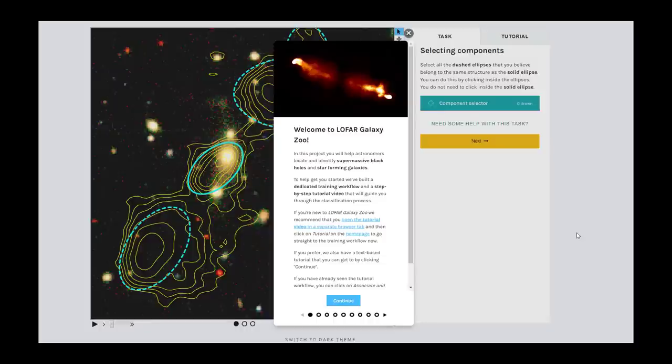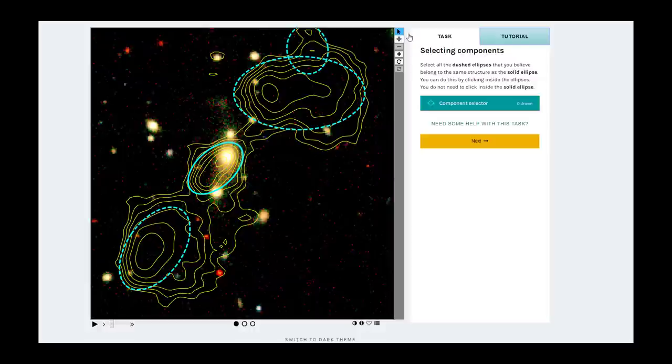The first thing that will pop up is the tutorial. Be sure to follow along with this video using the special tutorial workflow by clicking on the link in the tutorial. Since you are watching the tutorial video right now, you can go ahead and close the text tutorial by clicking on the top right. Then you should see the same image as shown here. You can always open it again later by clicking on Tutorial.